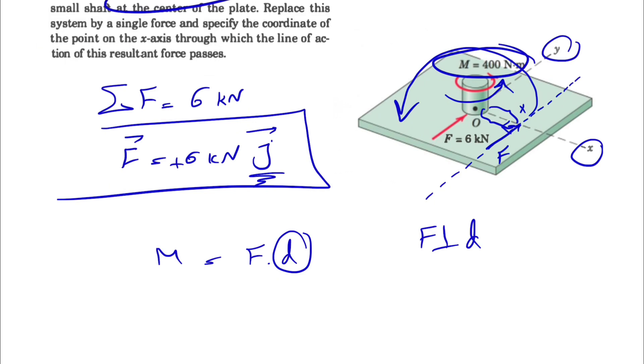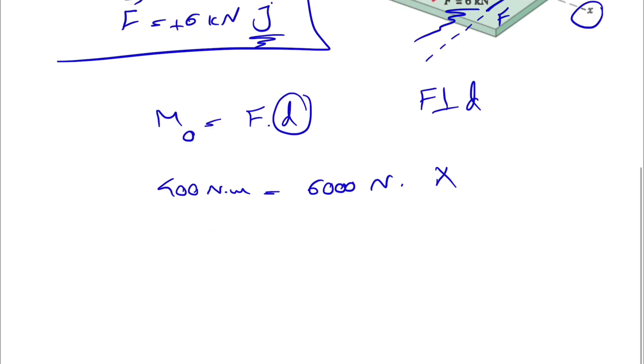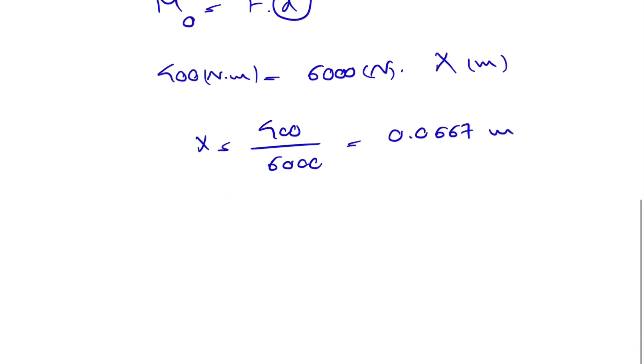The rest of this is pretty easy. We have the moment about 0.0 which is 400 newton meter, and we have our F which we have to keep in mind is in kilonewton. So if we want to write it down in newton, it will be 6000 newton times the x, which is the unknown that we are trying to figure out in here. If we do that, our x would be basically 400 divided by 6000, which is going to give us 0.0667 meter.